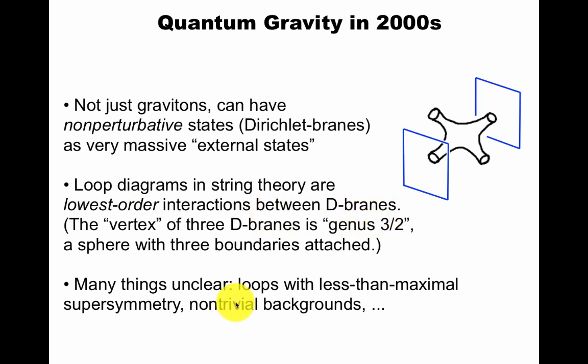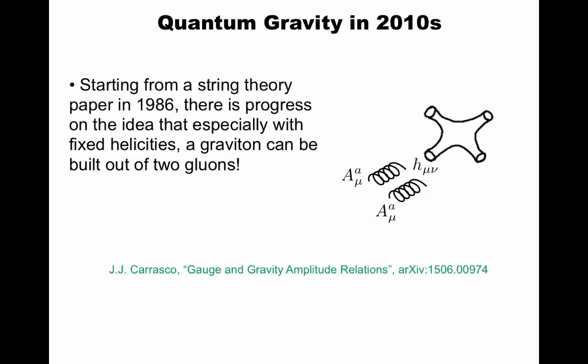Loops with less than maximal supersymmetry, non-trivial backgrounds, and many other things. Still, there was progress. This very interesting relation between a string theory paper from 1986 called KLT that led to progress on the idea that maybe gravity is the square of gauge theory, as is sometimes stated.